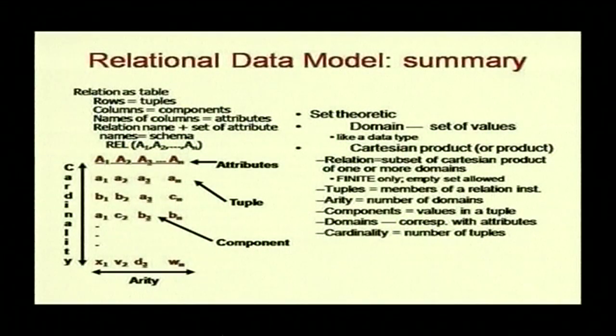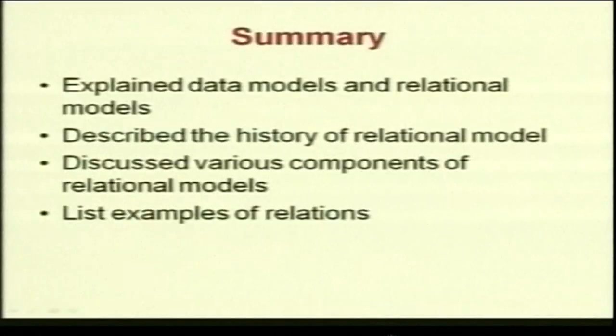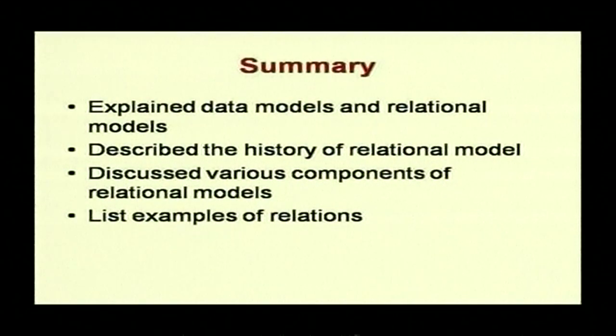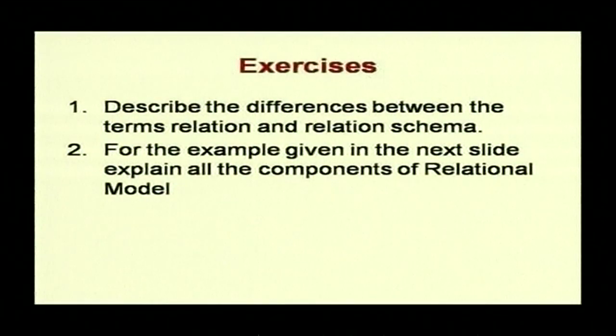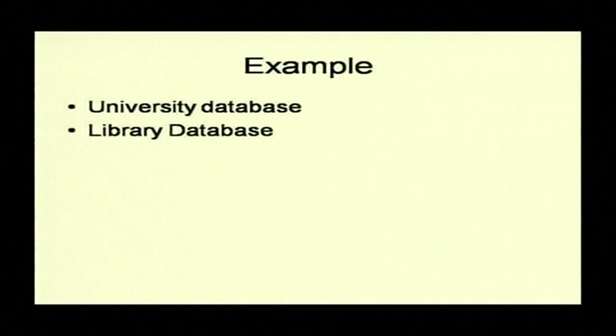In summary, rows are tuples, columns are attributes, and relation name plus set of attributes is the schema. We have explained the data models and relational models, described the history of the relational model, and discussed various components of relational models with many examples. As an exercise: explain the differences between the terms 'relation' and 'relation schema.' Take an example of a university or library database, explain all the components of the relational model, and decide the different relations in an intuitive manner. We will go into detail about how this is done formally later on.